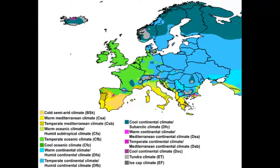Now we're going to go through the climate regions, different types, and apply them to Europe. We're going to see three main types: the marine west coast, the Mediterranean, and the humid continental. Let's go through each of them through the alphabet, A through E.